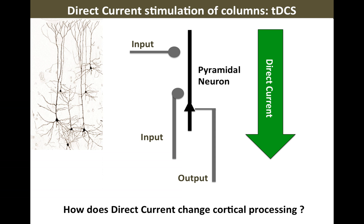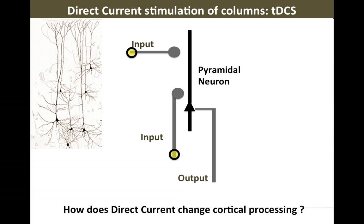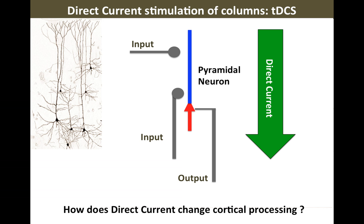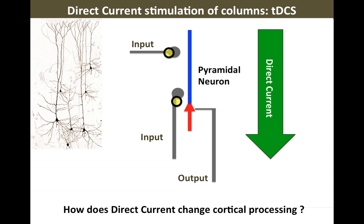We can think of direct current stimulation as polarizing cells in the brain. Here I'm showing the anodal form of stimulation. What are these cells normally doing? They're receiving information from different parts of the brain and making a decision about whether or not they should fire. When we apply direct current stimulation and polarize these cells, we can ask: for the same input arriving before, now in the presence of tDCS, will these cells process this information differently? Will the same information arriving at the brain now produce a different response?